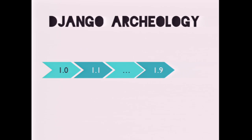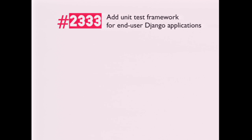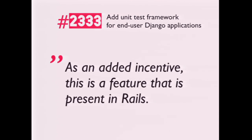I'd like to start with a quick run through the history of Django's test framework — a trip from version 1.0 to 1.10. About 10 years ago, sometime before Django was out of beta, before releasing 1.0, this ticket gets created. We're still at four-digit ticket numbers, and it's titled 'Add Unit Test Framework for End User Django Applications.' There's a killer argument: this is a feature that is present in Rails.